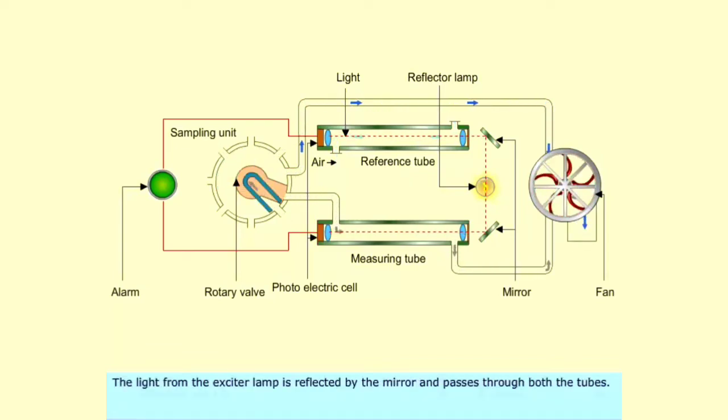The light from the exciter lamp is reflected by the mirror and passes through both the tubes.